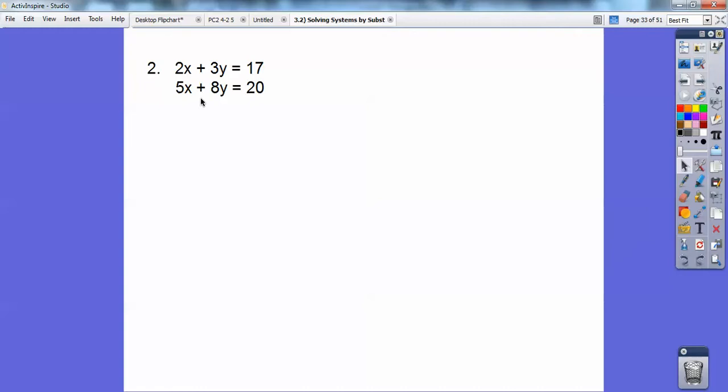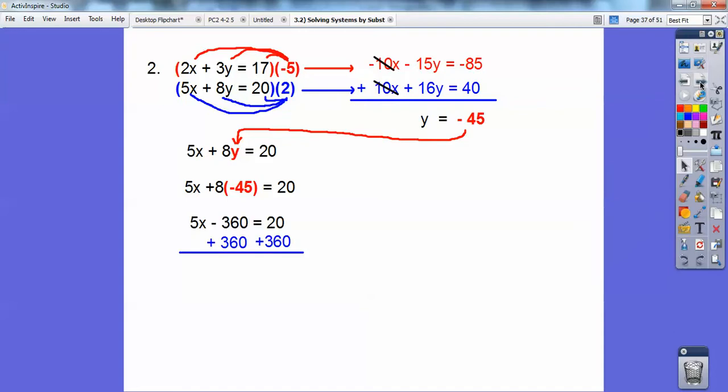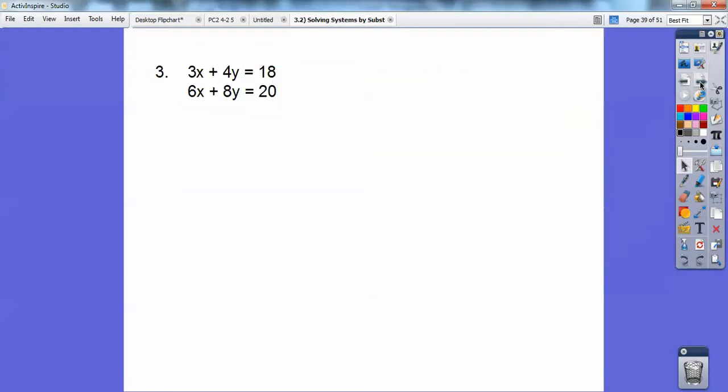Alright, so here, you guys, what you can do, you can't just add them together like we did before. You've got to either make these one 10x and the other one negative 10x or make these guys 24y and negative 24y. Excuse me. So I would choose the 10s, you guys. So I'm going to take that top equation, multiply it by negative 5, and I get this equation, this red guy right here. Multiply this bottom equation by 2, and you get the blue equation right here. Now I can add red y plus blue y, and I get y equals negative 45. Substitute y equals negative 45 into, I chose the bottom equation. So when I plug that in, I get, ooh, I get a big number, don't I? I remember this. I get x equals 76 on this one. So 76 comma negative 45.